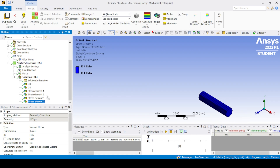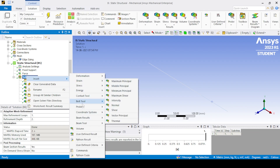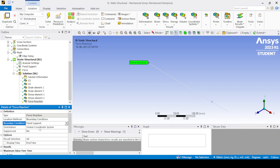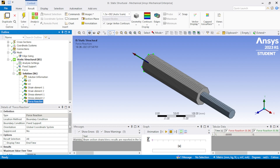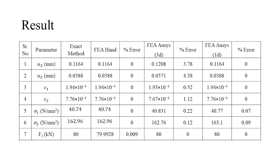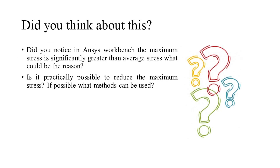For finding force reactions, go to Probe, select Force Reactions, and choose Fixed Support. The results are tabulated as shown, and error is calculated using the exact value from the strength of material approach. The error is within the limit and can be further improved by adding a greater number of elements or reducing the body size. During the ANSYS simulation in 3D, the maximum stress is significantly greater than the average stress — what could be the reason? Is it practically possible to reduce the maximum stress, and if so, what methods can be used?